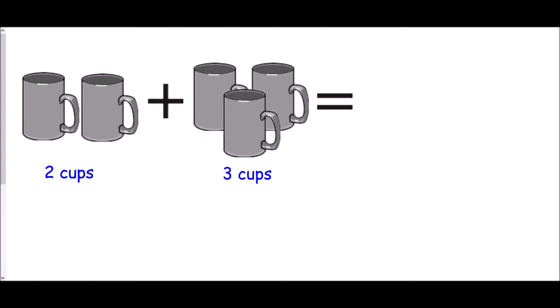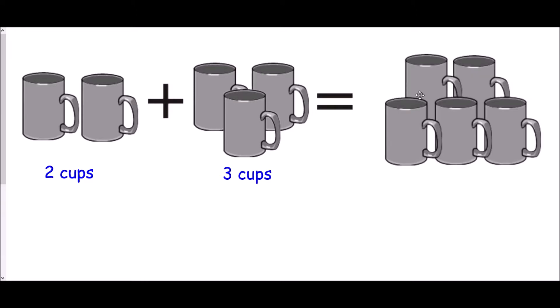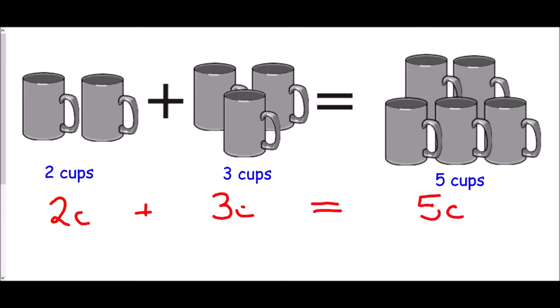I'm going to start with a question. If we had two cups and we added three cups, what would we then have? Well if we put them all together, we would have the two cups plus the three cups - we would have five cups. Now if we were doing this in what is known as algebra, using letters to represent numbers, I could say the two cups is 2C and I'm adding three cups, 3C.